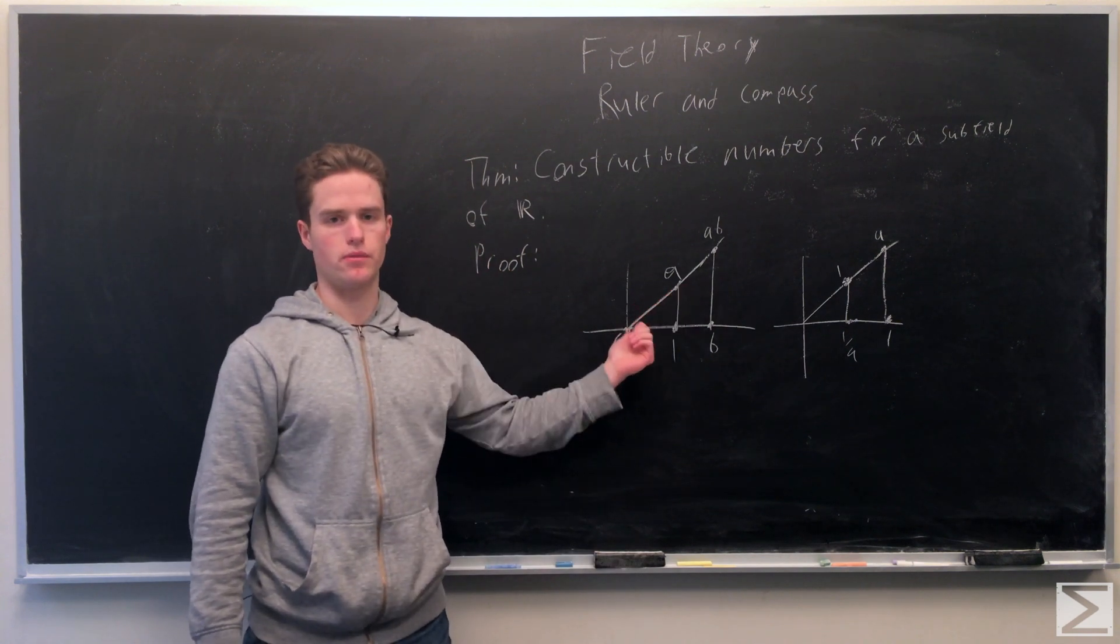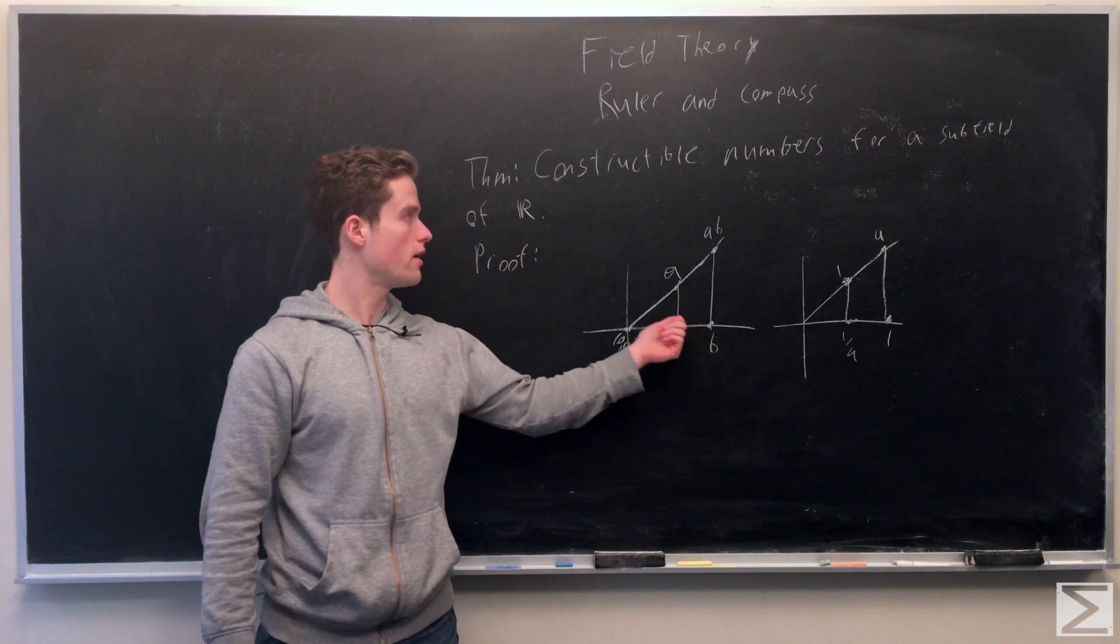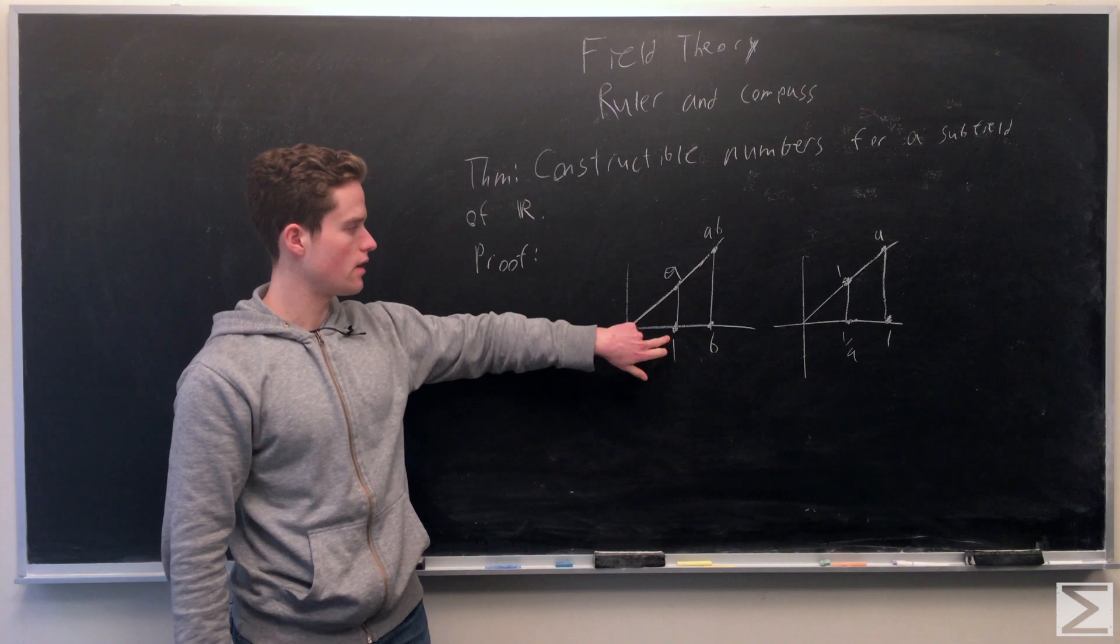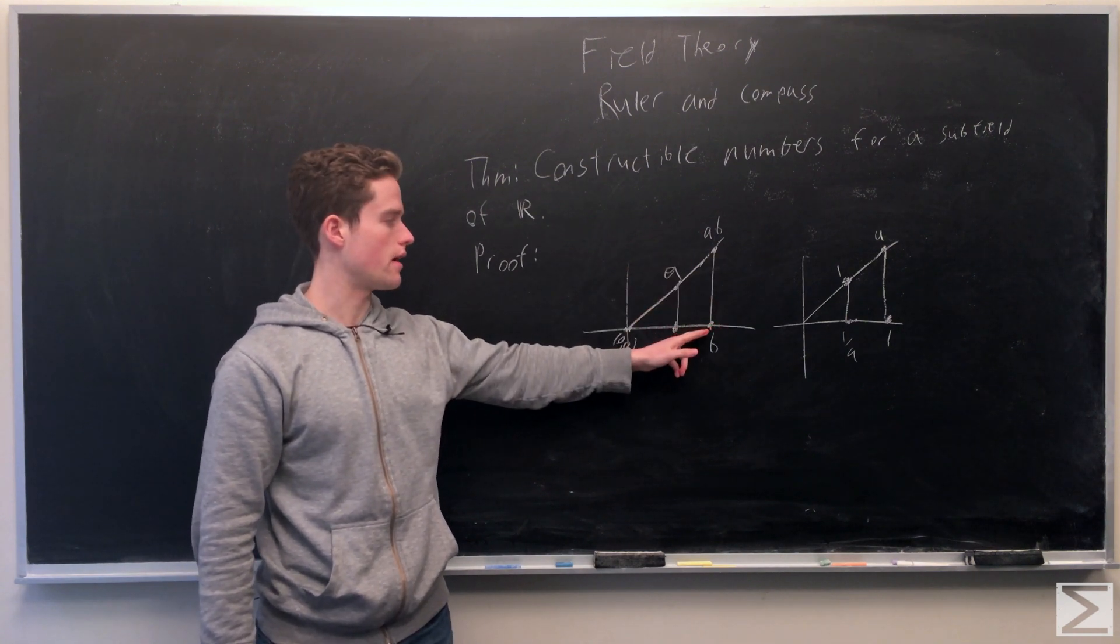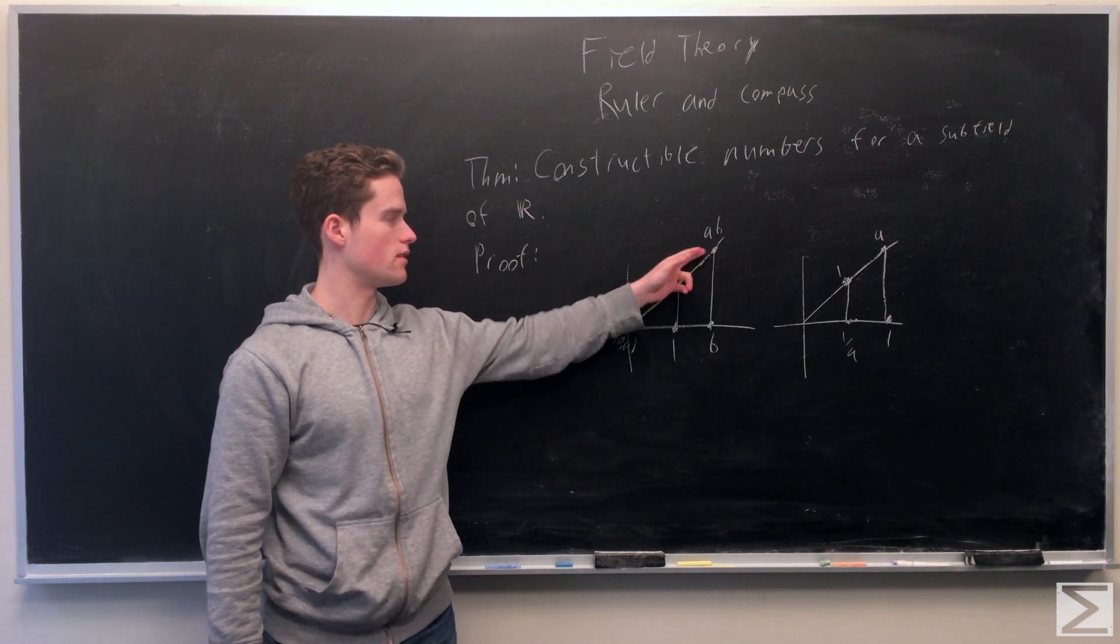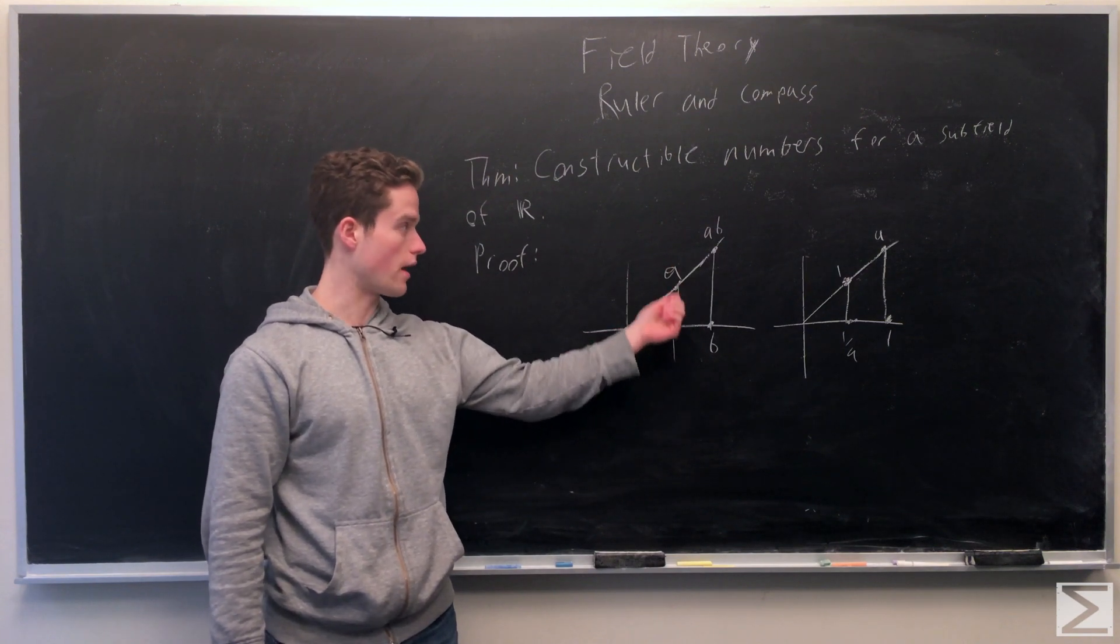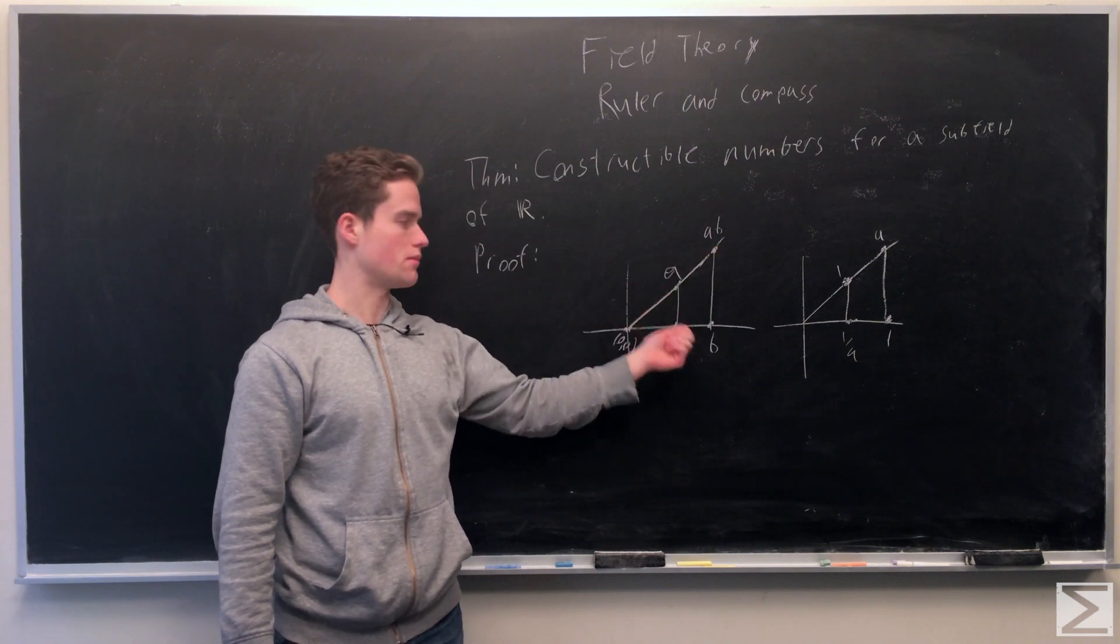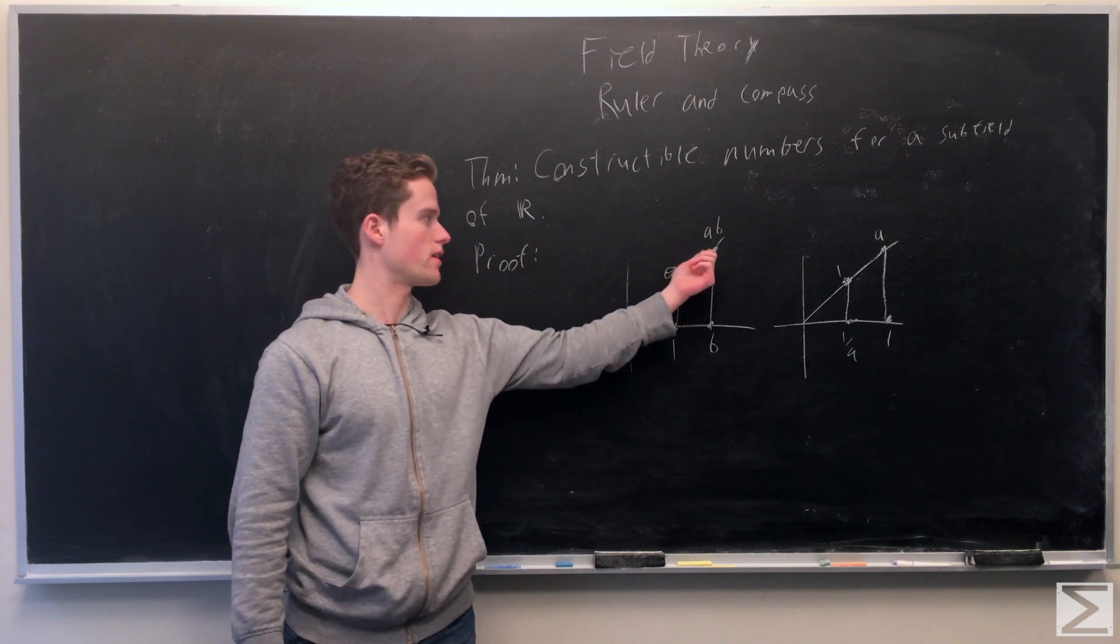We have a point length A away from the center. We have these two points, length 1 and B away. From what we previously proved, we can construct this line between these two points, and we can construct a parallel line going through B. Where this intersects, this will be length AB from the center, because the ratio of this length to A is the same as the ratio of B to 1. We just multiply A by B, and we get AB.